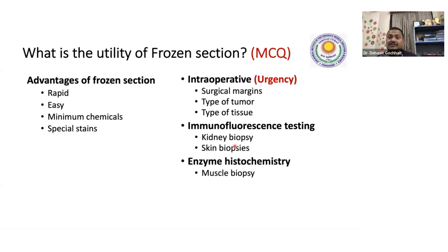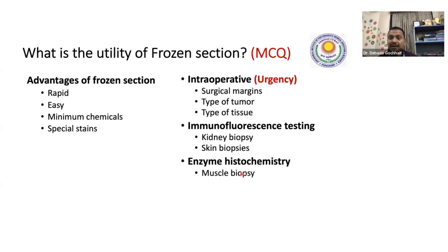Sometimes during parathyroid surgery they're not sure whether they've taken out parathyroid tissue or a lymph node — a frozen section can confirm this. There are also conditions called myopathies — pathology of muscle — which can be of various types. To identify the specific type of myopathy, we use enzyme histochemistry: we test whether certain enzymes are positive or negative, at what pH, and what the pattern of distribution is. If muscle is put into routine processing, the chemicals will degrade the enzymes.